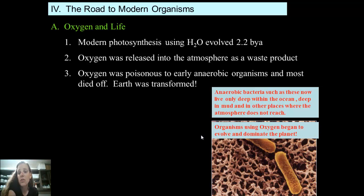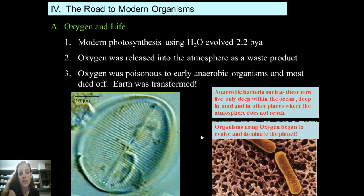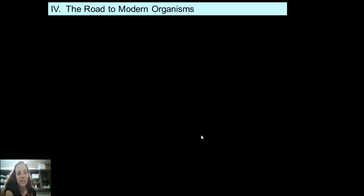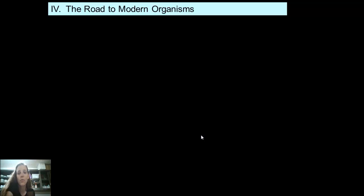Organisms using oxygen began to evolve and dominate planet Earth. To recap the road to modern organisms: from Miller and Urey's experiment showing the creation of complex molecules, to the first precursors to living cells, to the first living cells — very primitive, prokaryotic, lacking a nucleus, and heterotrophic. As food began to run out, evolution favored organisms that could make their own food, known as autotrophs.